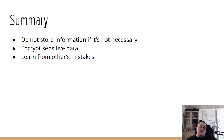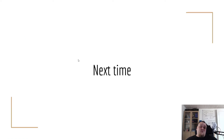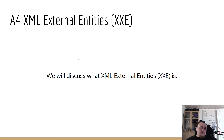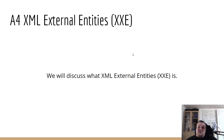The summary is: do not store information if it's not necessary, encrypt sensitive data, and learn from others' mistakes. Next time, we will talk about A4 — the fourth vulnerability in the OWASP Top 10. It's called XML External Entities, or short, XXE. Until then, I'll see you next time.